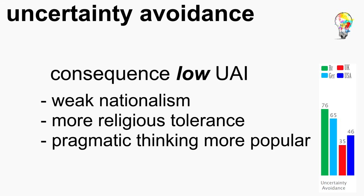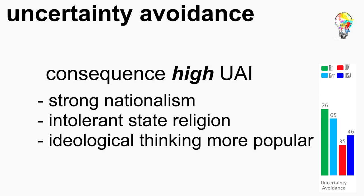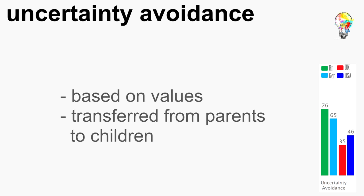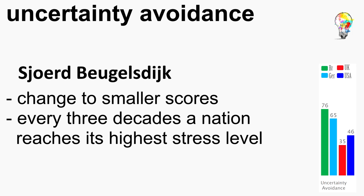Consequences for low UAI countries are weak nationalism, more religious tolerance and pragmatic thinking. High UAI countries on the other hand have strong nationalism, an intolerant state religion and ideological thinking is more popular. These scores are also based on values inherited from parents and rarely change. As Beugelsdijk predicted, there is a worldwide shift towards lower scores. In addition, national stress levels oscillate with a wavelength of 25 to 30 years, meaning every three decades a nation hits a high level of stress due to context factors. Aside from that, the scores are stable.